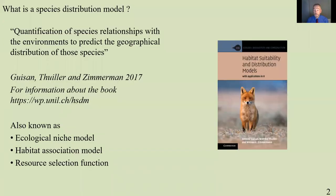So what is a species distribution model? Essentially it is a predictive map which shows where an animal or a plant ranges across a landscape — how it's distributed. It uses historic or current records of where the animal or plant is, and compares those locations with environmental characteristics such as rainfall, snow, or temperature, topography, elevation, vegetation, and human influences — are there towns, agriculture or roads? It combines all that environmental information with species records and uses sophisticated statistics to create a distribution map of where that animal or plant is likely to be found.